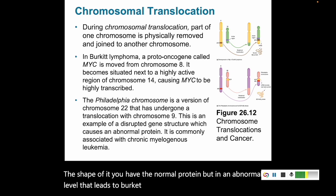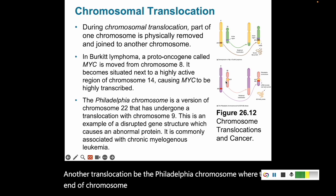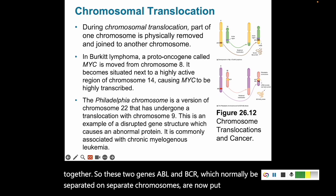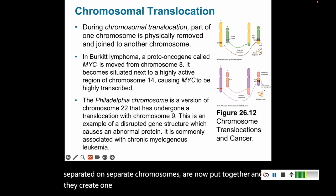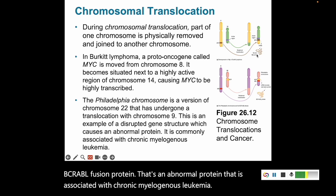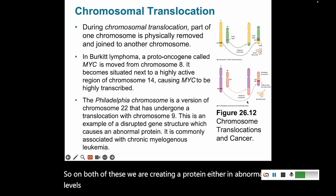Another translocation is the Philadelphia chromosome, where the end of chromosome 9 and the top of chromosome 22 end up together. The two genes ABL and BCR, which should normally be separated on separate chromosomes, are now put together and create one fusion protein. This BCR-ABL fusion protein is an abnormal protein associated with chronic myelogenous leukemia. In both of these cases, we are creating a protein either in abnormal levels or as an abnormal protein, which encourages that cell to survive and multiply.